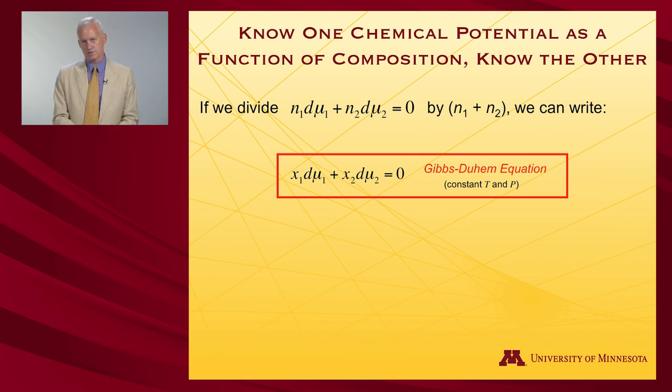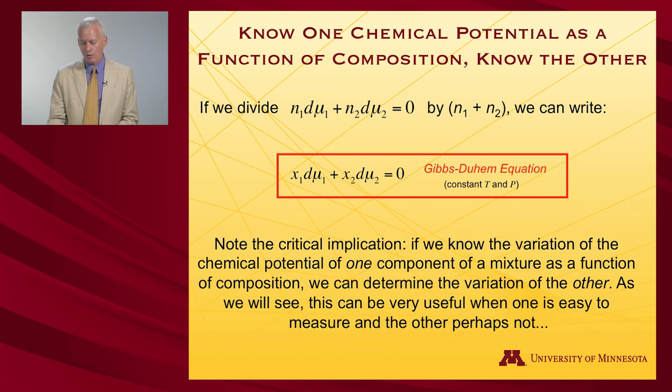And so again, I'm going to emphasize the critical utility of that equation, which we will have occasion to use in the next few lectures. If you know how one chemical potential is varying as a function of the composition of the solution, which is dictated by the mole fractions, then you know what the corresponding change must be in the other chemical potential, because the sum of those two must be equal to zero. So if you can measure one easily, and maybe not the other, that gives you a handle on the other.